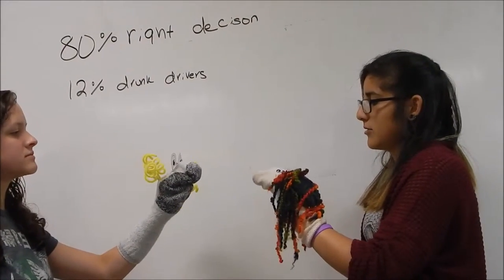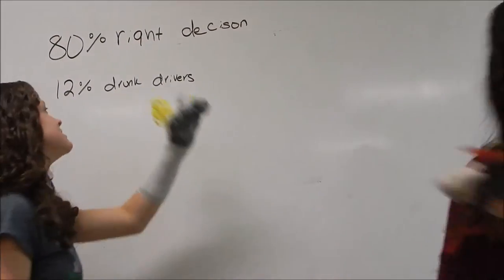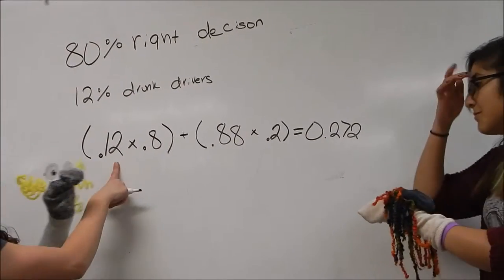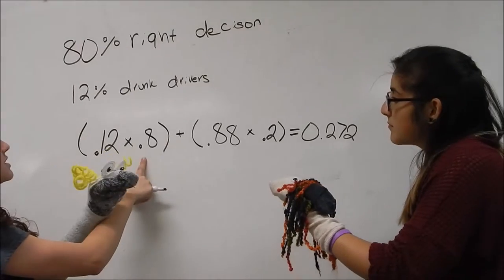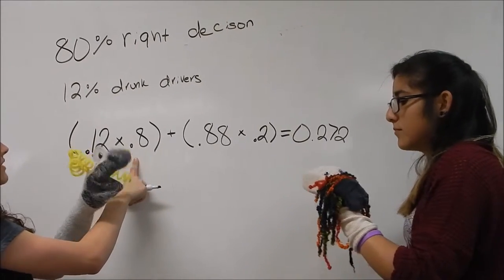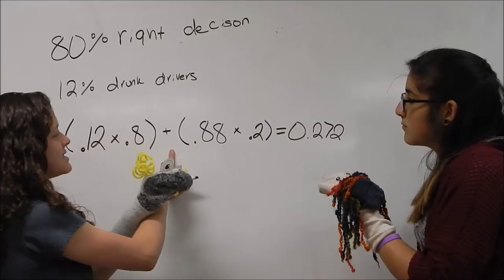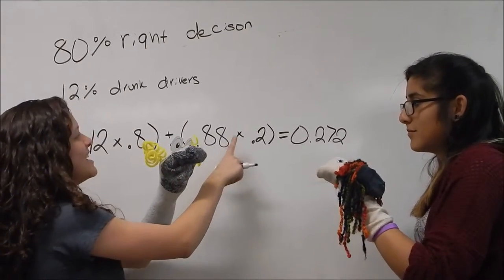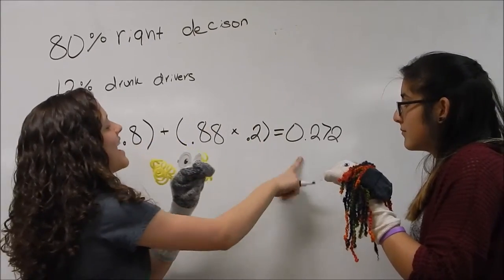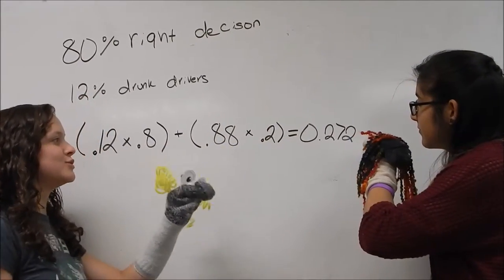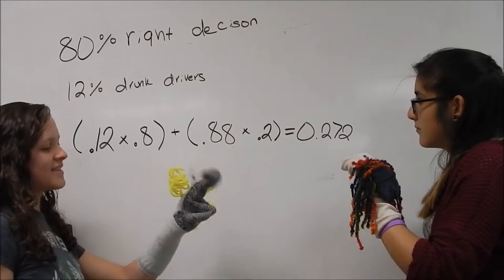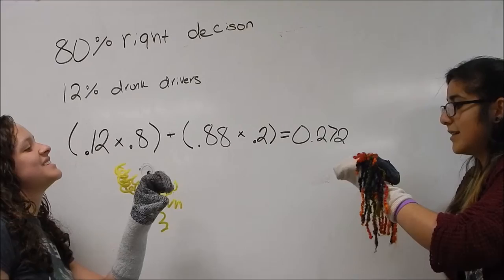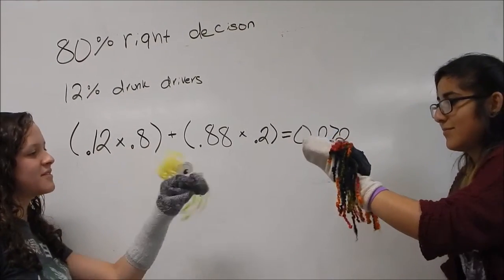What's the probability that any given driver is going to be detained? Well, what is this? So the probability of a drunk driver times the probability that the police officer will make the right decision of him being detained, plus the probability of a non-drinking driver being detained. And that equals 27.2%. So any given driver has the probability of being detained 27% of the time. Perfect.